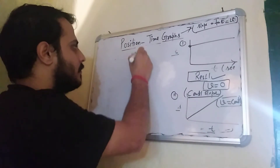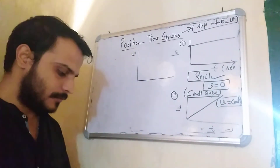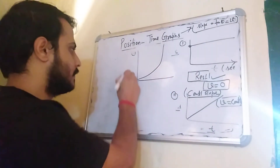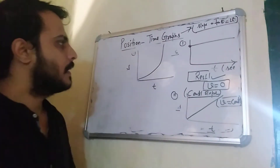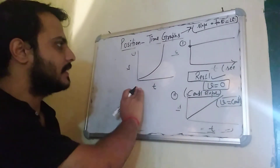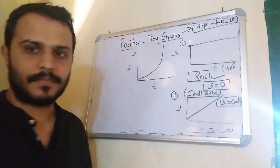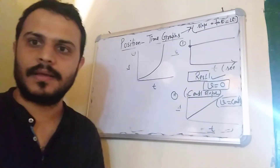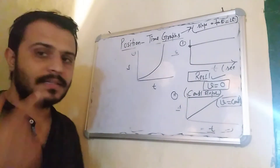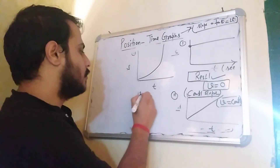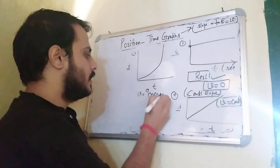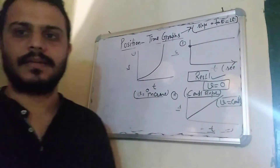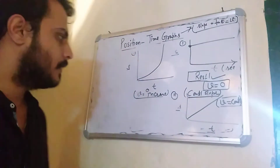Now I am coming to the third type of graph. This is an S-T graph where you will see that the position is changing with respect to time very fast — the position is changing rapidly. This means that your velocity is increasing. So this curved position-time graph represents that your velocity is increasing.